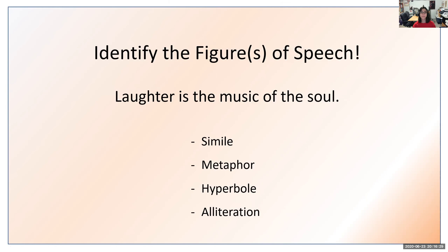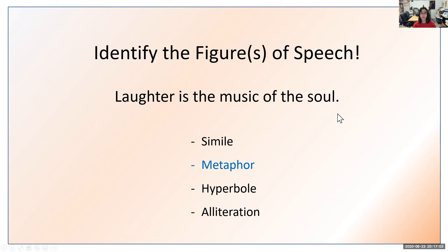'Laughter is the music of the soul.' Which figure of speech is that — simile, metaphor, hyperbole, or alliteration? If you said metaphor, you are correct — it uses the keyword 'is.' This makes a comparison between laughter and the soul, but it uses 'is' to connect the two. It's not saying 'laughter is like the music of the soul' — it says 'laughter IS the music of the soul.' That keyword 'is' makes this a metaphor.